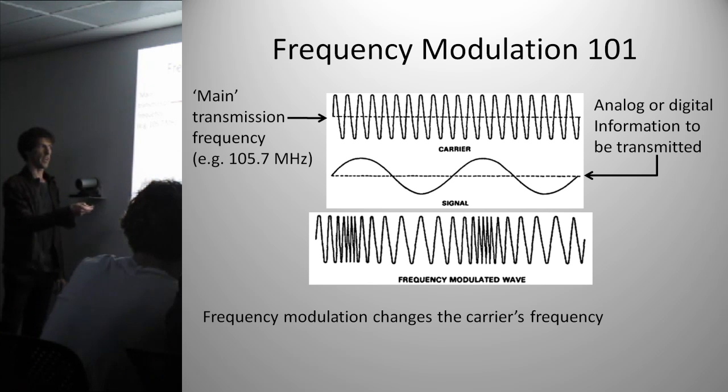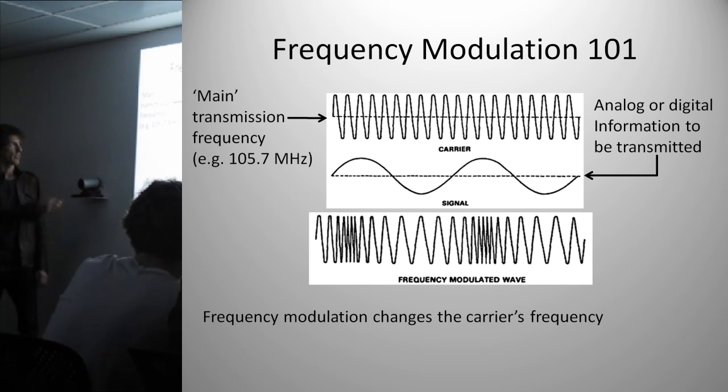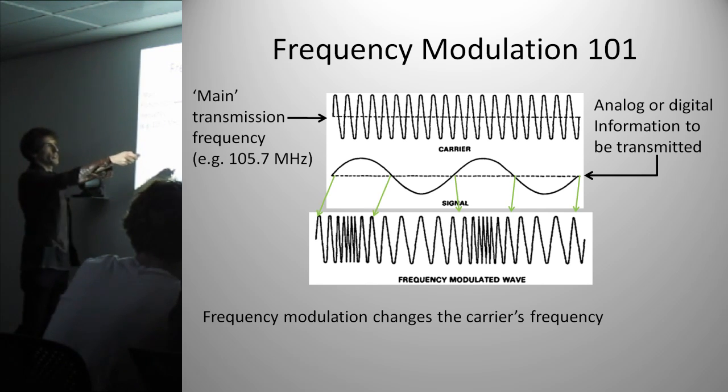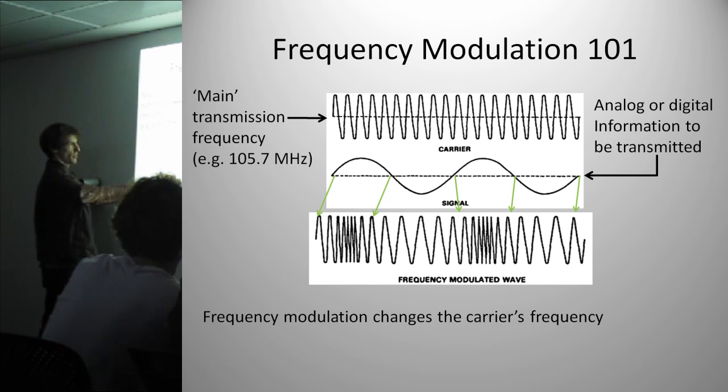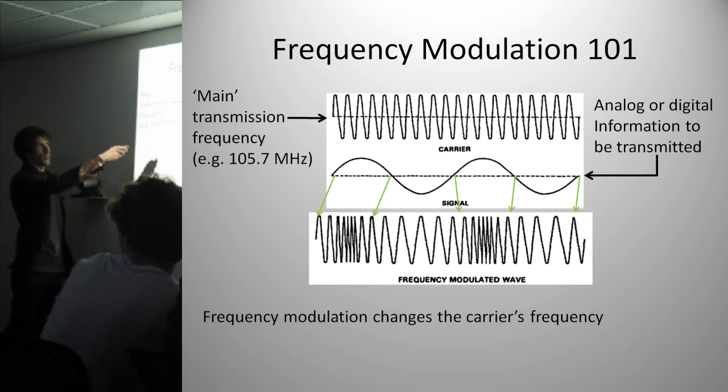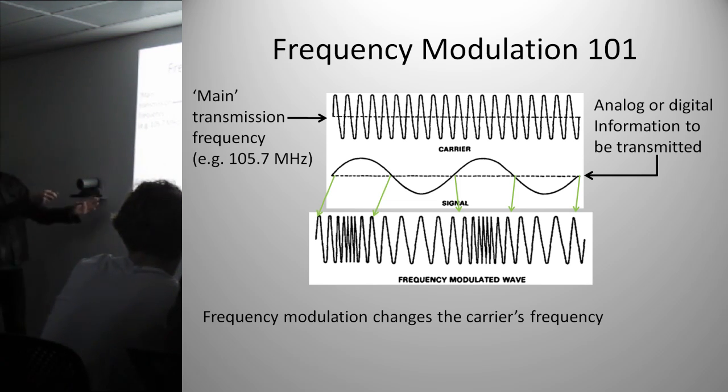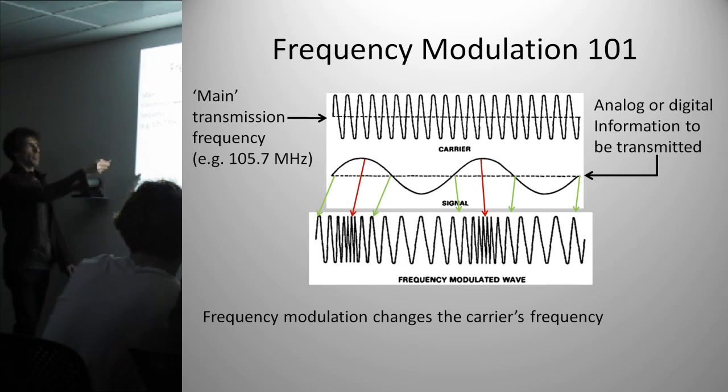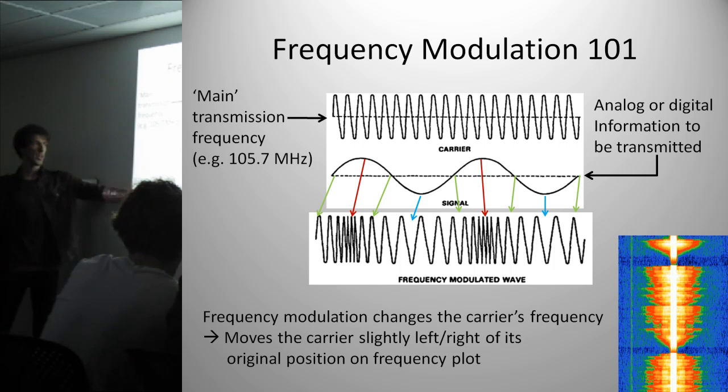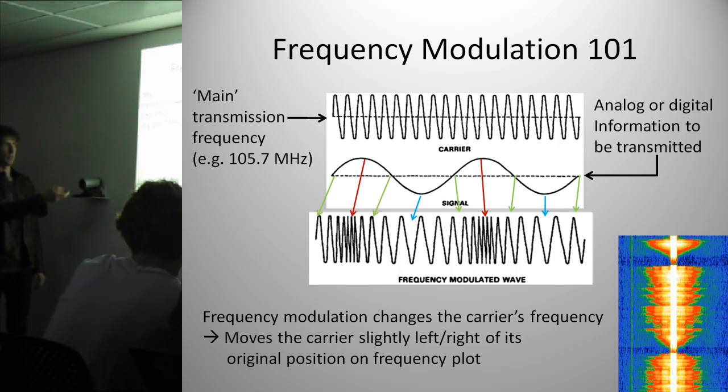This is what it looks like over the air. And what you can see here is that at the zero crossings, the frequency, instantaneous frequency of this wave here, is the same as the carrier, because at that instantaneous point, there's nothing on there. At the peaks, you can see that the frequency is higher, and at the troughs, the frequency is lower. So what this means is that the frequency modulation changes the carrier's frequency on an instantaneous basis, depending on this incoming signal.